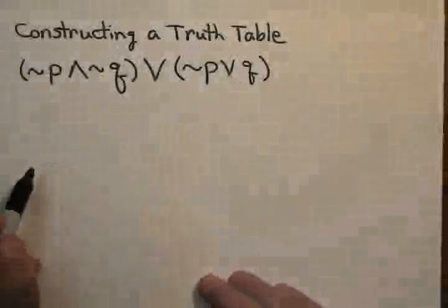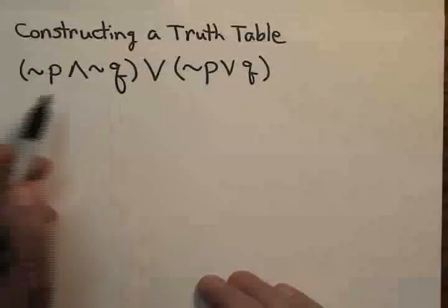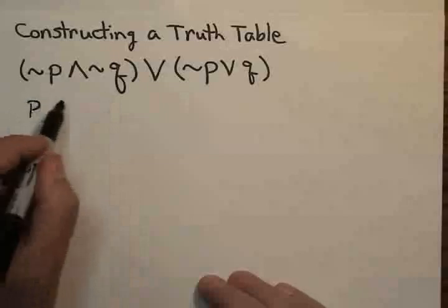The thing I noticed first of all is that I need two columns, one for each statement, P and Q. There are two simple statements, P and Q.